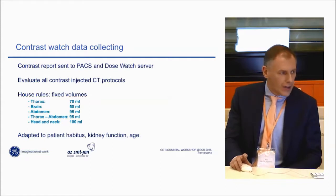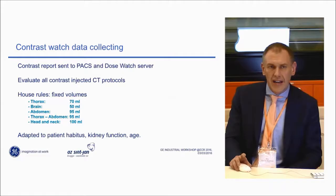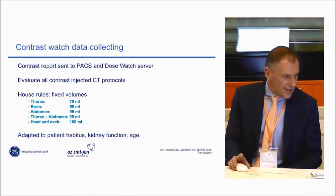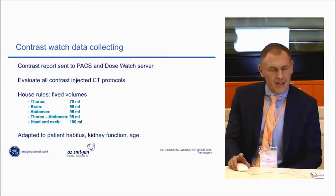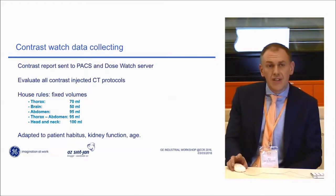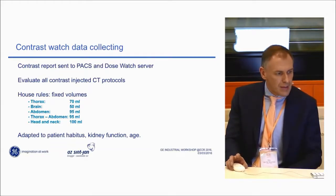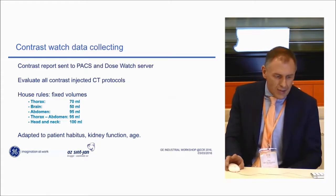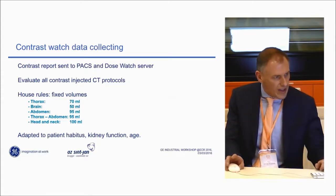How much contrast do we inject? This is different for all hospitals. In Bruges, we have our fixed volumes — our house rules — and it depends on what kind of CT you're performing. For CT of the thorax we inject 70 ml, brain is 50, abdomen venous phase or thorax-abdomen is 95, and all head and neck CT scans receive 100 ml of contrast. Of course, all these volumes can and should be adapted to patient habitus, kidney function, and age by the technologists — but as we will find out, this is not always the case.